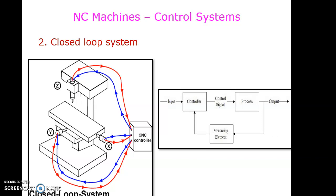The main difference between both systems is that an open loop system does not contain any feedback devices, but a closed loop system contains a feedback device — and that is not limited to just sensors; any kind of feedback device qualifies.